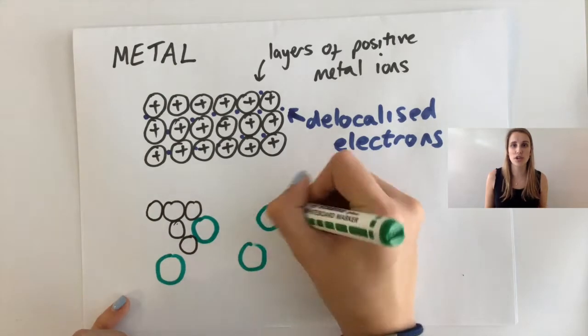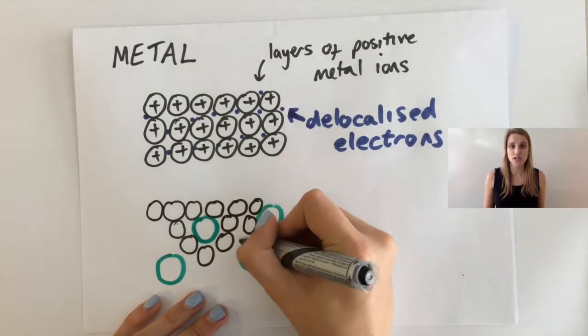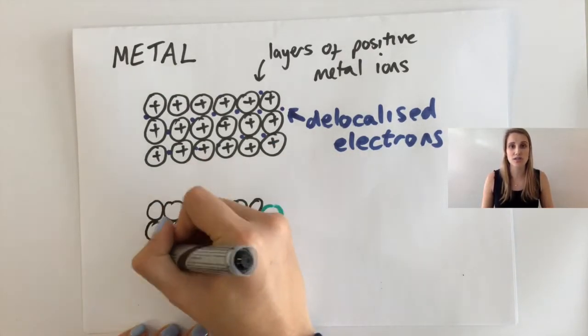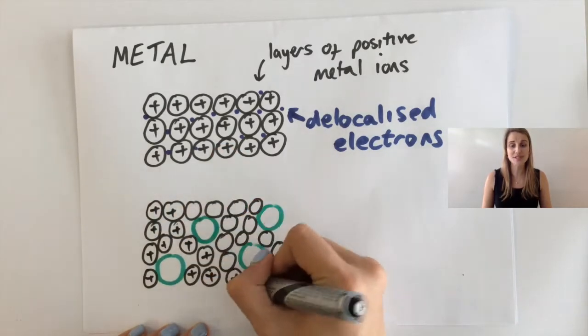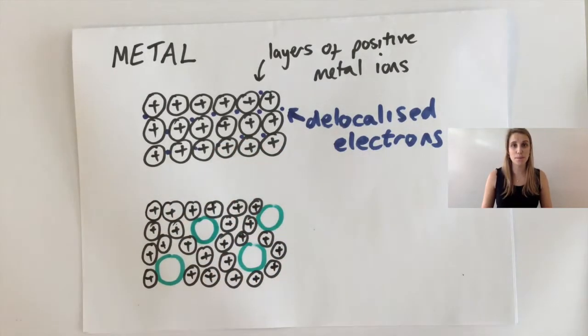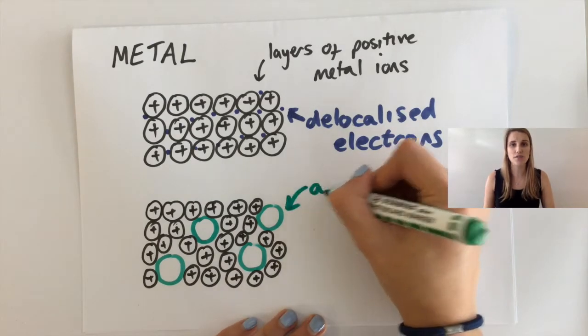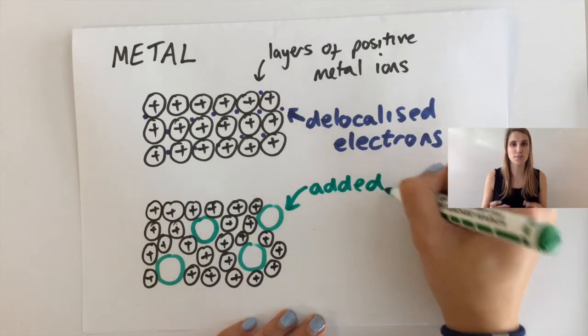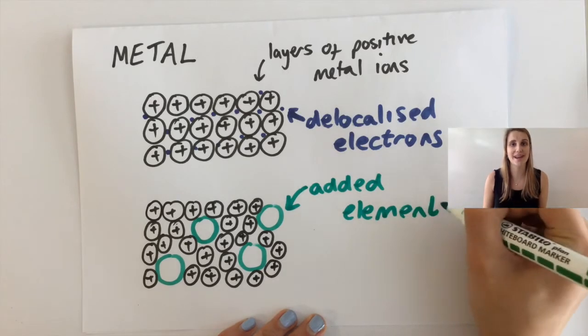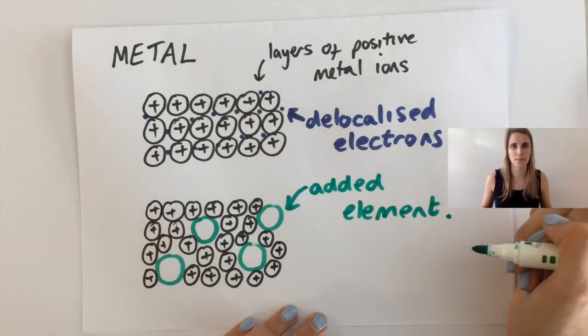So in this scenario we use alloys. So if I draw what an alloy looks like here, you can see that I now have the black circles for the original metal, but now I've kind of interspersed these big green circles which represent another element, whatever that might be.